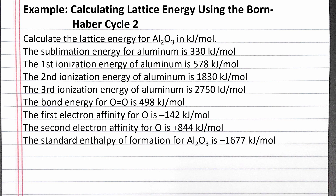To find the lattice energy, we'll need to start by writing out the standard enthalpy of formation equation for aluminum oxide. The standard enthalpy of formation is the enthalpy change associated with the formation of one mole of aluminum oxide from its constituent elements, aluminum and oxygen, in their standard states.